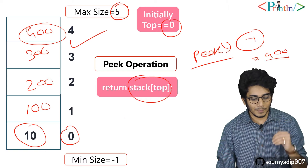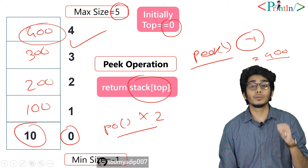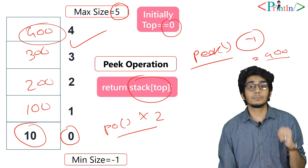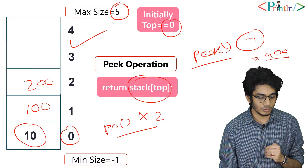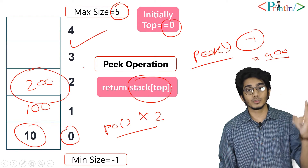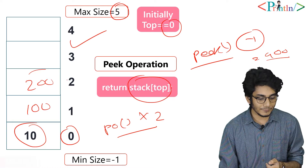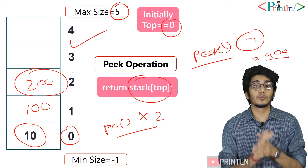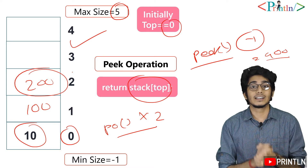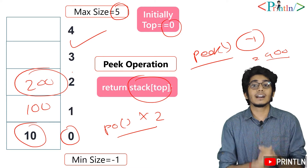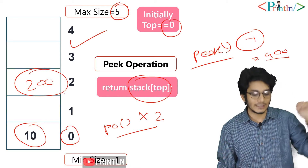Now let's say we will pop two elements — we'll call pop two times. After calling pop function two times, our stack will contain 200, right? We have popped two values: 400 and 300. So pick function will return 200, which is the value at the top.